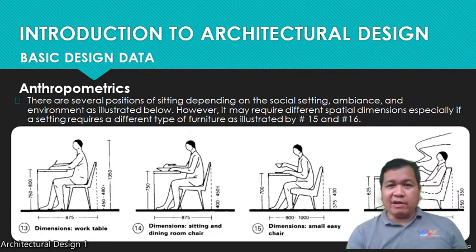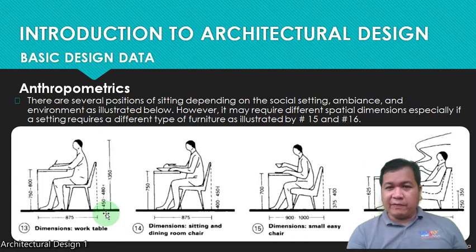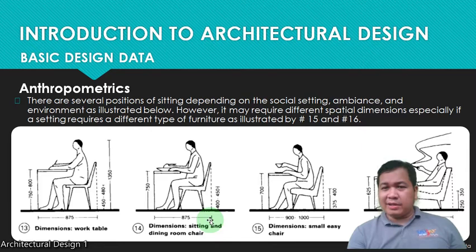There are several positions of sitting depending on the social setting, ambience, and environment as illustrated below. The dimensions for working are 875 millimeters, and 750 to 800 millimeters in height. From the tip of the chair up to the finished floor line, it's 450 to 480 millimeters. For a dining room chair, it's 750 millimeters, with a seat height of 400 to 450 millimeters. So when you design restaurants or commercial spaces which cater food, these are the dimensions you might consider.